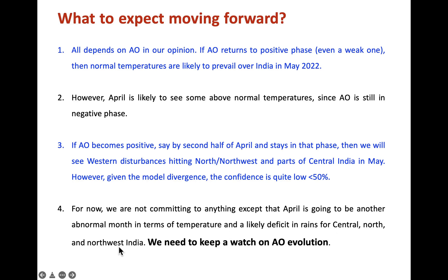Come May, things may change, where temperatures may slightly reduce to normal values. There will also be Western disturbances, which will allow rains or thunderstorms to persist in north, northwest, and parts of central India. So we need to keep a watch on the Arctic Oscillation evolution.